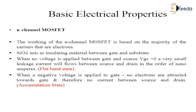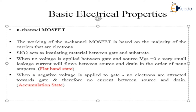The N-channel MOSFET works based only on majority carriers, which are electrons. This is because it is a unipolar device — unipolar means current conduction is due to only majority carriers. In contrast, in a Bipolar Junction Transistor, current conduction is due to both electrons and holes. In the N-channel MOSFET, the majority carriers are electrons.